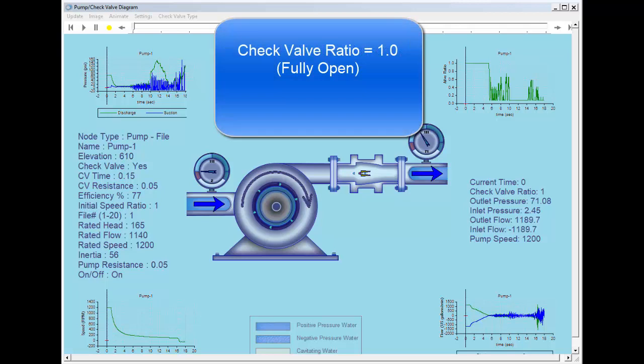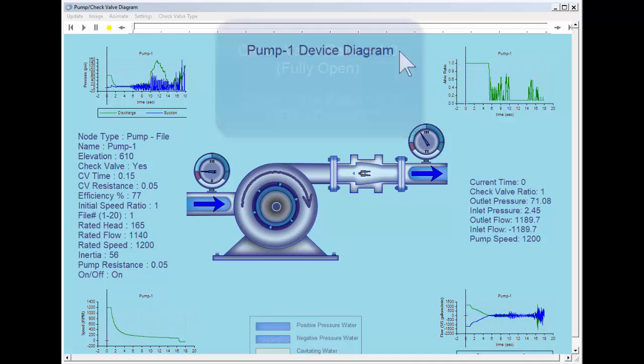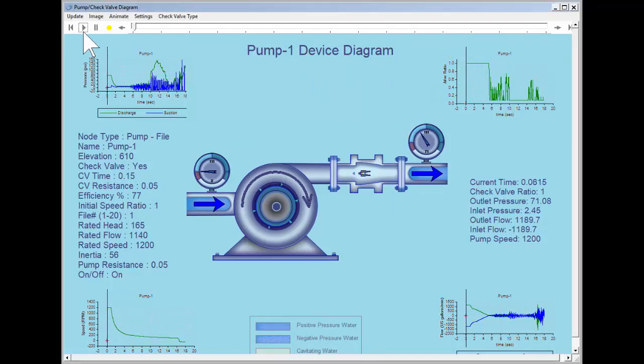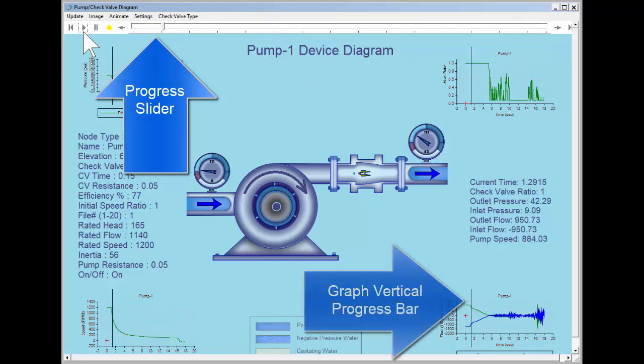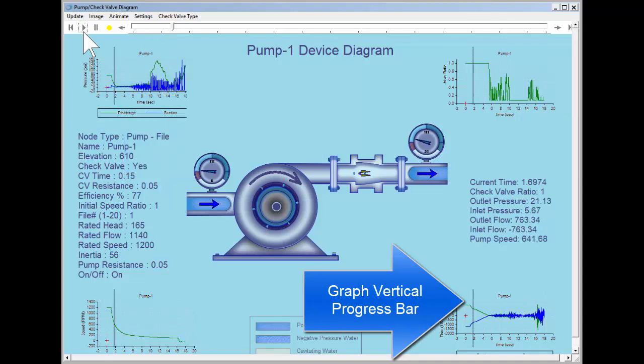The level of deviation will be defined as 1.0 being fully opened and 0.0 being fully closed. We can play the animation and see the progress slider at the top of the screen, and we also see vertical progress bars on each graph, which display the timestamp of the simulation.